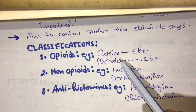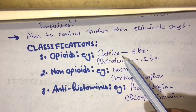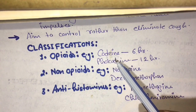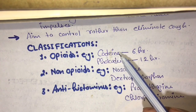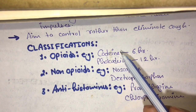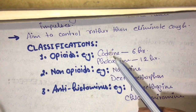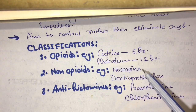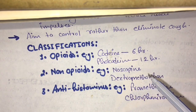With long-term use, codeine and falcodeine can produce drug dependence. They also produce analgesic and narcotic effects, which noscopine does not produce.